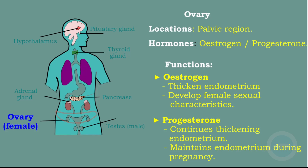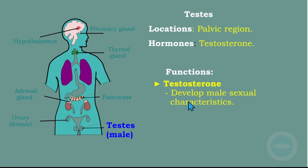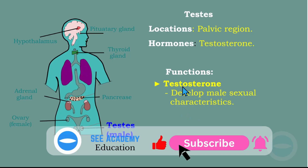Another gland is the testes, found only in males. The location is the pelvic region. The hormone secreted is testosterone. The function of testosterone is to develop male sexual characteristics.